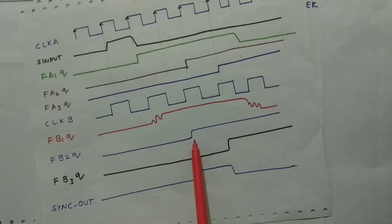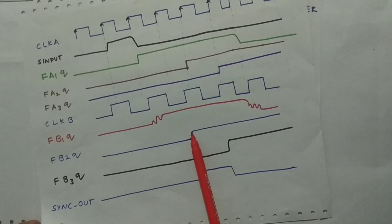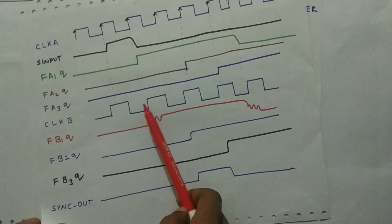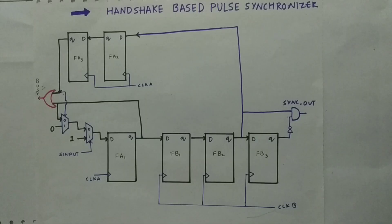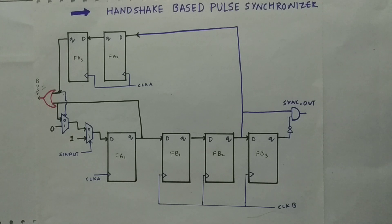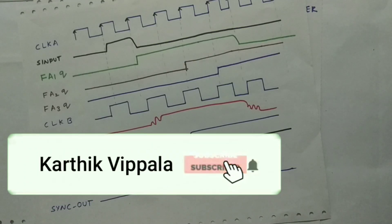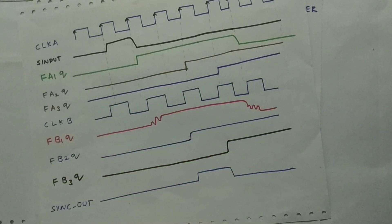The flip-flop synchronizers reduce the metastable condition. There is no metastability on the feedback path because the output has already settled before being re-sampled. I hope you understood this topic — if you want more about different synchronizers, check the playlist linked in the description or on my channel. If you have any doubts, comment below, and please subscribe and turn your notifications on.